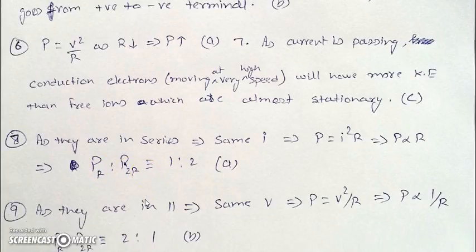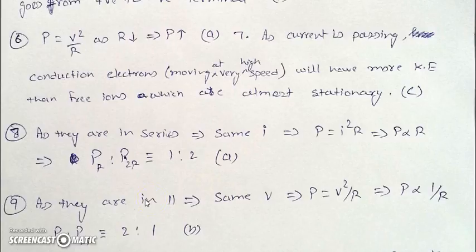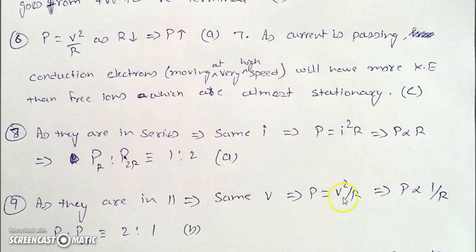In the next question, those two resistances R and 2R are connected in parallel. When in parallel, they have the same voltage. Using P = V²/R with the same V, power is inversely proportional to R. So the ratio of powers will be 2:1, since the ratio of resistances is 1:2.